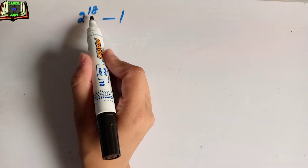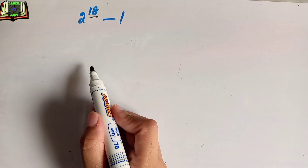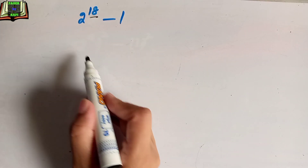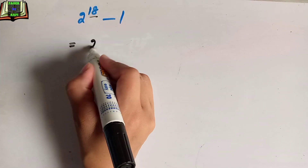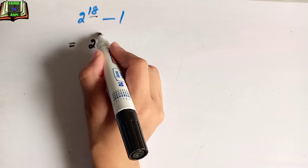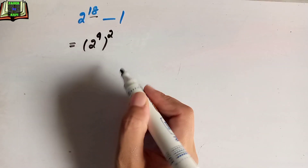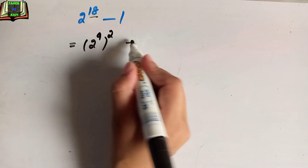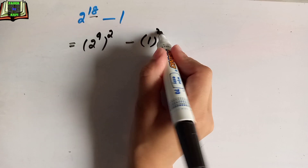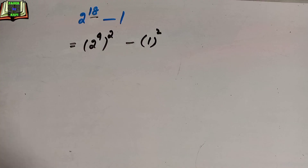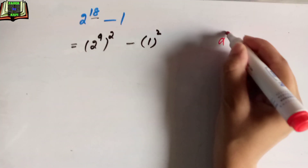The question is 2 to the power 18 minus 1. Now, 2 to the power 18 can be written as (2 to the power 9) whole squared, minus 1 squared, by splitting the exponent 18.